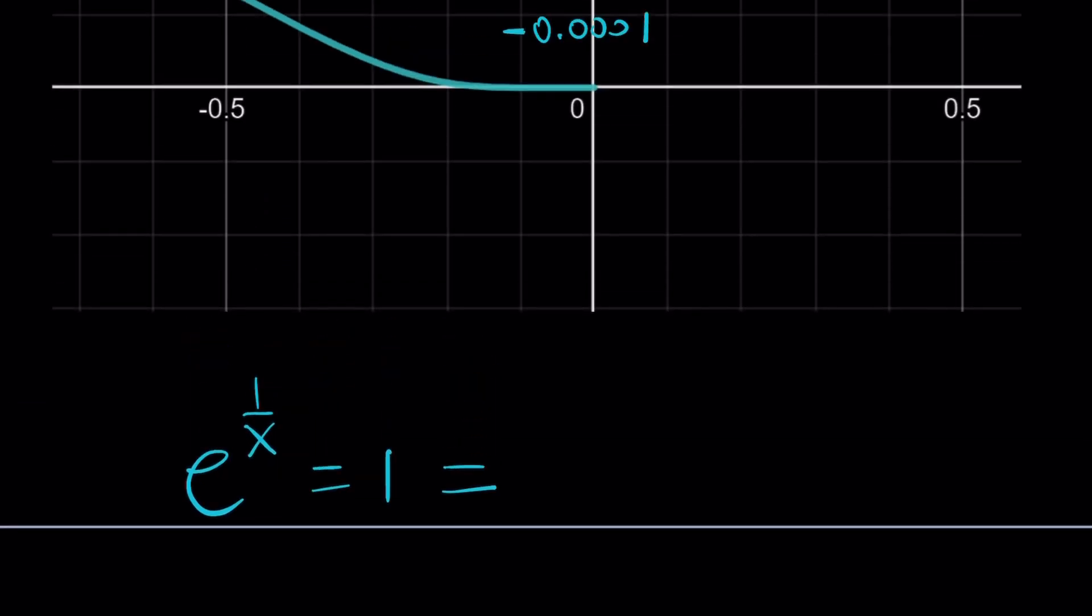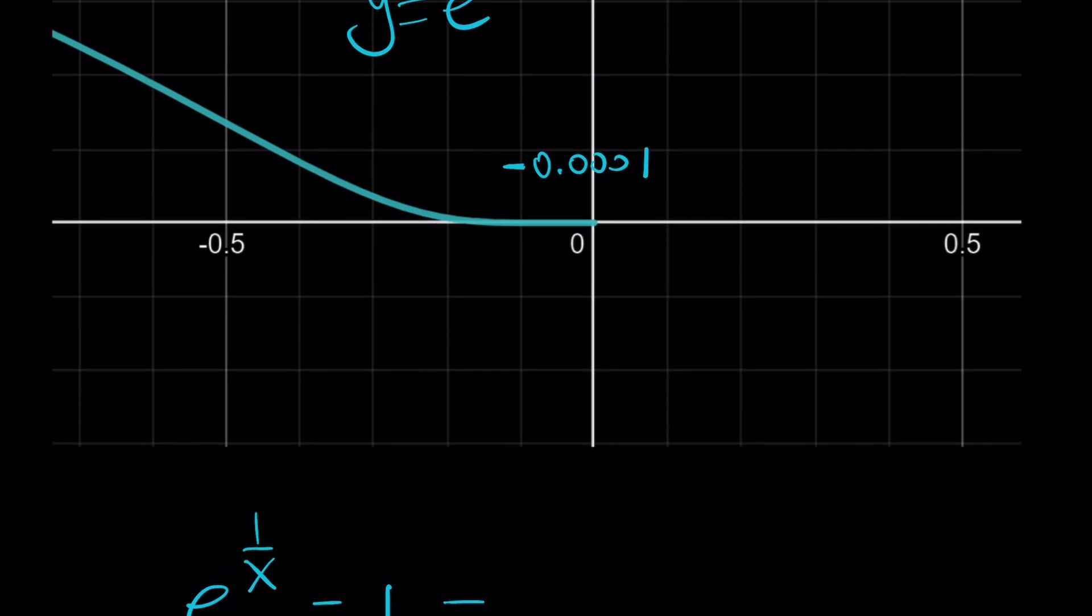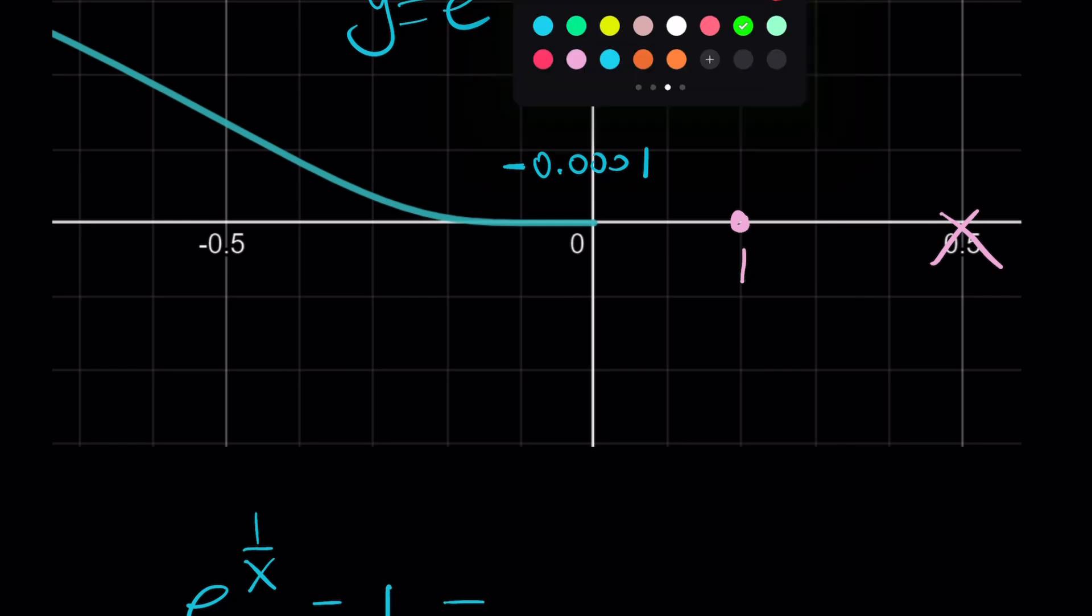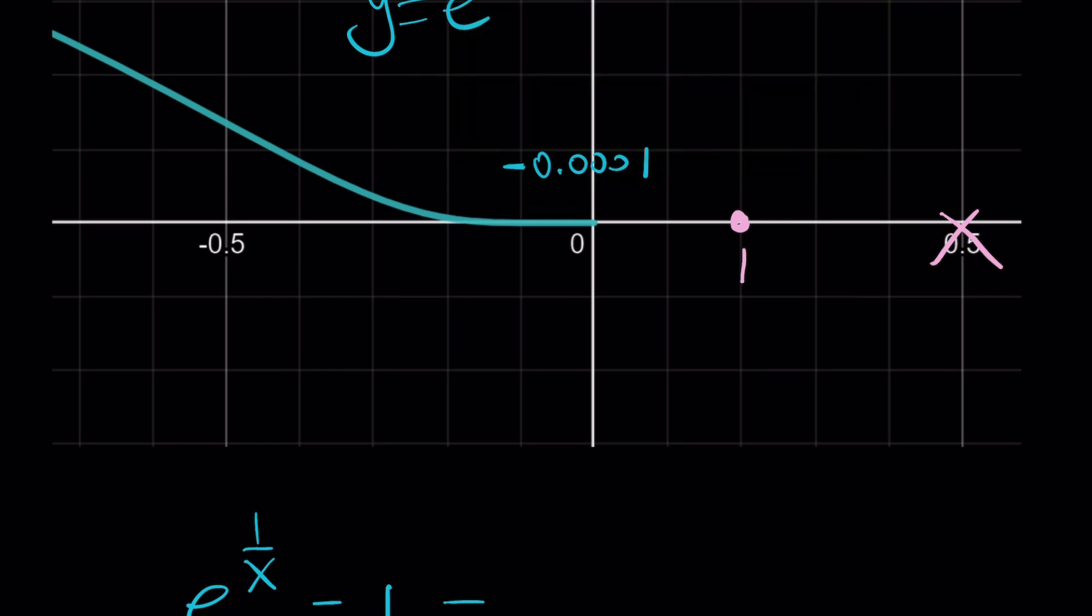But anyways, so we're going to do the following. We have e^(1/x) equals 1. And we're going to write the 1 as a complex number. Suppose this is 1. And now our number 1 is here. And its distance from 0 is going to be 1 unit, so r equals 1.